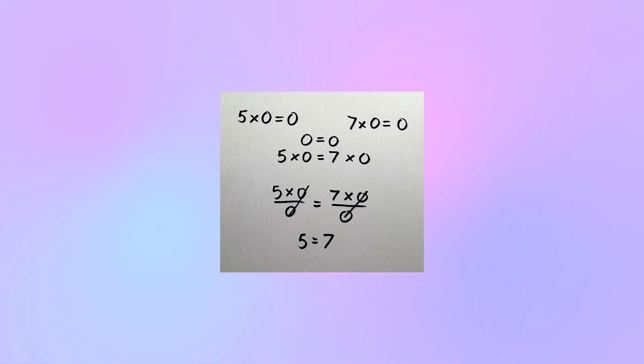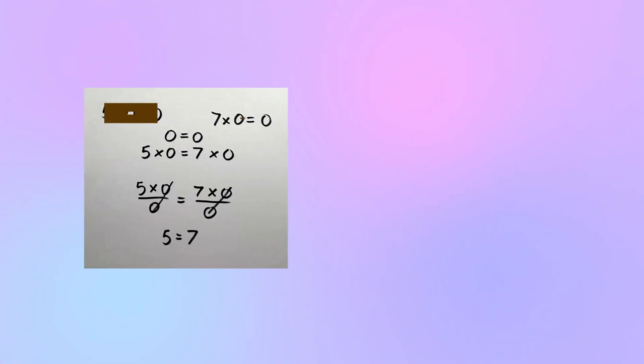So what went wrong? To figure that out, we're going to write down the things we did as general rules, and then see which rule we don't like. The first one is very simple: anything times zero is zero. In this case, we're just going to write that as a times zero equals zero.